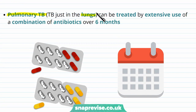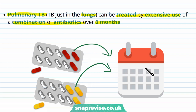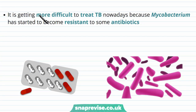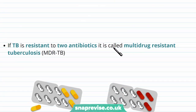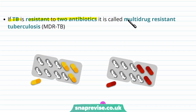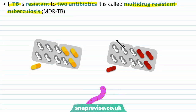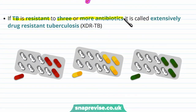Pulmonary TB, which is TB found in the lungs only, can be treated by extensive use of a combination of antibiotics over about six months. Various different antibiotics used over this period will hopefully tackle and kill all the bacteria. However, it's becoming more and more difficult to treat TB because Mycobacterium tuberculosis has become resistant to some antibiotics. If the TB is resistant to two antibiotics, we call it multi-drug resistant tuberculosis, or MDR-TB. If it's resistant to three or more antibiotics, we call it extensively drug resistant tuberculosis, or XDR-TB.